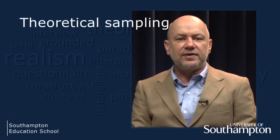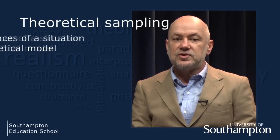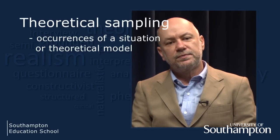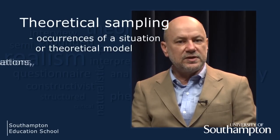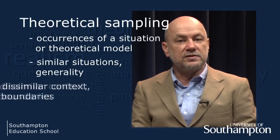Theoretical sampling is another kind of purposeful sampling. In theoretical sampling you select occurrences of a situation or theoretical model so you can elaborate and examine the model. You might initially look for very similar situations to show that the model has some generality, then look for very dissimilar contexts to establish the boundaries of your ideas. Theoretical sampling is often used in case study research – you select a case or context that you feel is a particularly good example of the situation you wish to explore. For example, if I was examining the use of iPads, I might pick a school that had a reputation for being innovative as my case study.